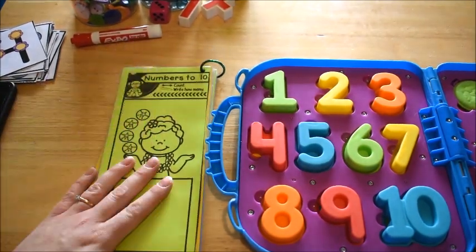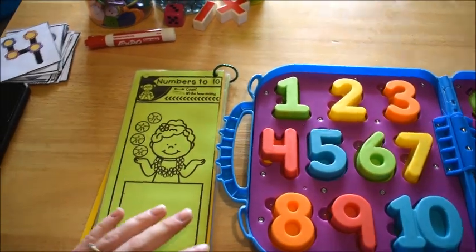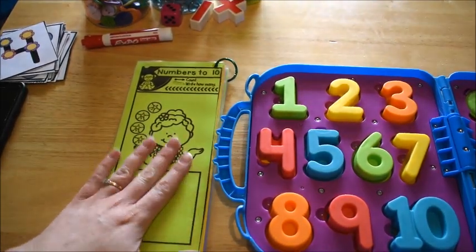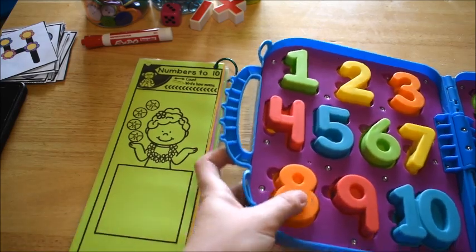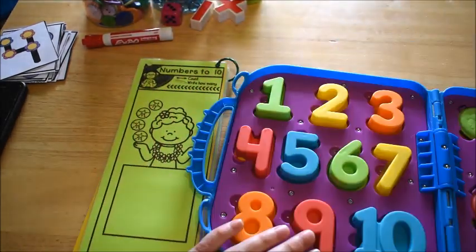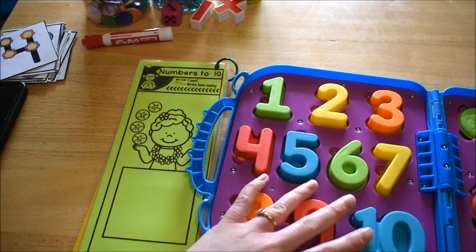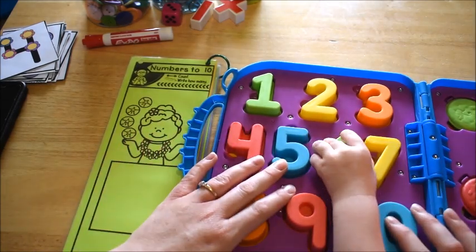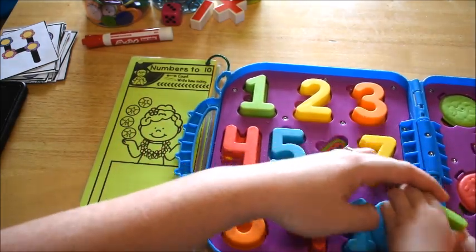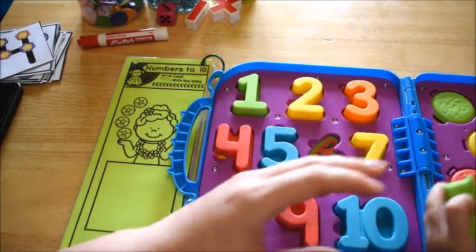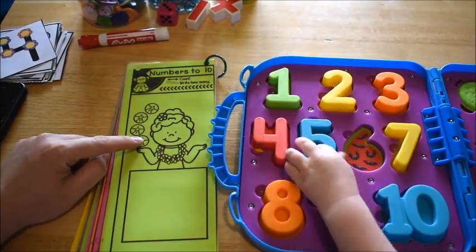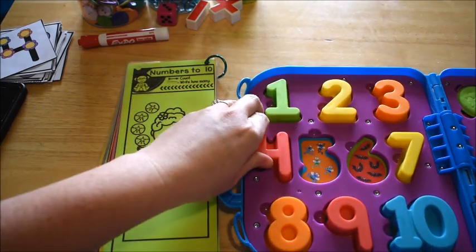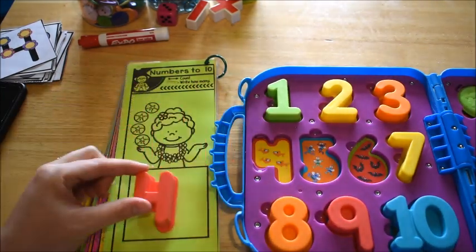I paired this up with some of our number manipulatives. This is a little toy Cookie Monster thing with numbers on it. What he had to do is count how many seashells she has—one, two, three, four—then he had to grab the number four and place it in the square.